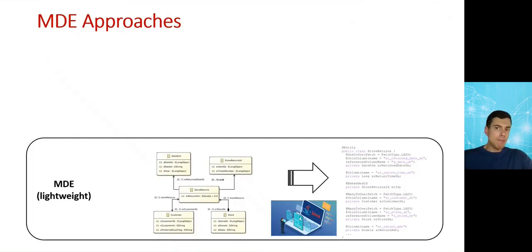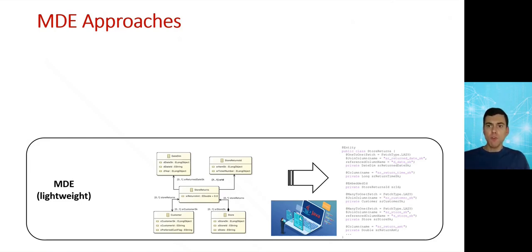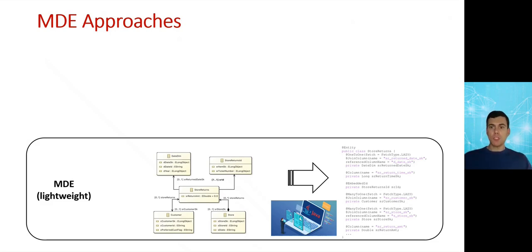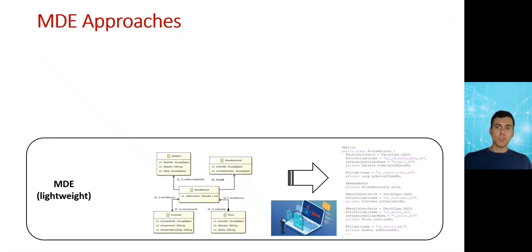In MDE we normally use standard modeling notations like UML to express software aspects. Initially, models are defined manually for informing the development process. After modeling design concerns, we implement those design ideas into source code that contributes to a deliverable software artifact, which could be an executable prototype or documentation.